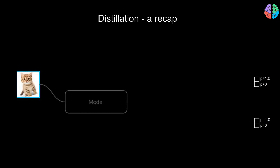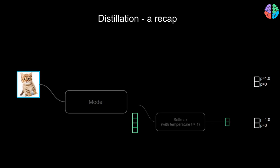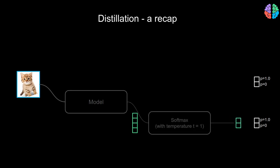Let's say we have a neural network in a classic machine learning setting that recognizes cats and dogs. To train this network, we first pass a cat image through the model and get the representation or embeddings of the image. The embedding is then passed through a softmax function to get the probabilities for the input classes — dog and cat.